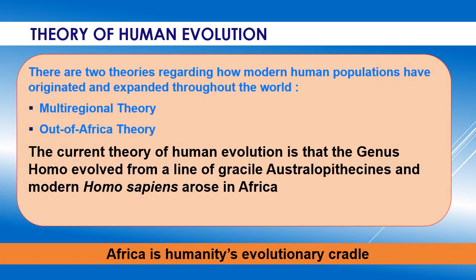There are two theories regarding human evolution. The first is the multi-regional theory, according to which members of the genus Homo evolved in different regions of the earth simultaneously after an ancient ancestor moved out of Africa. The other theory, which is mostly accepted, is the Out of Africa theory. According to this, the genus Homo evolved from a line of gracile australopithecines and modern Homo sapiens arose in Africa. Thus, we can say that Africa is humanity's evolutionary cradle.